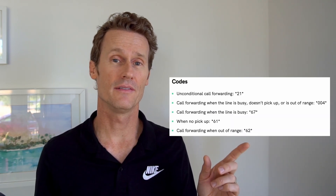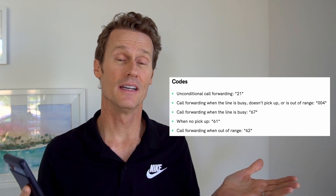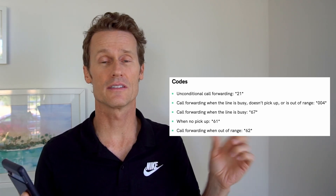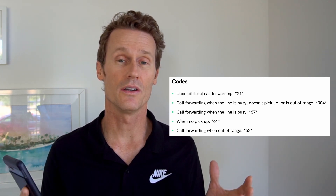Another way to change your call forwarding settings is using dialer codes on an Android phone. A popular one for unconditional call forwarding: you do a star symbol, 21, another star, then type in the phone number you want calls to forward to. Once you press call, all your incoming calls will forward to that number. There are also other call forwarding dialer codes — same process: star, the code, star, then the phone number you want to forward to.